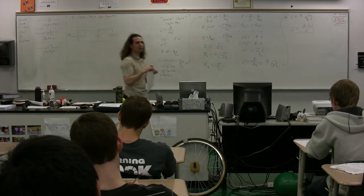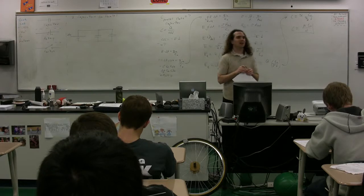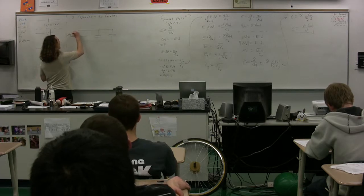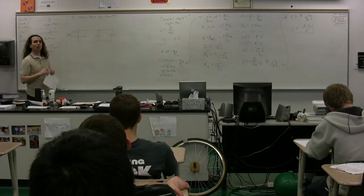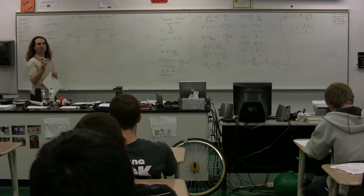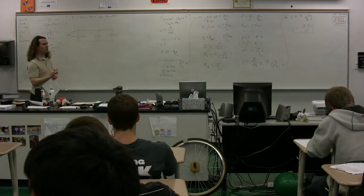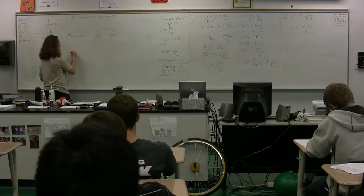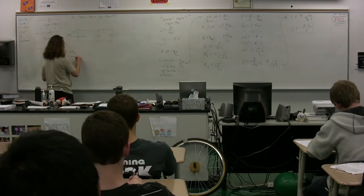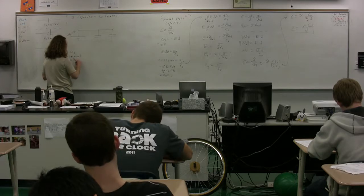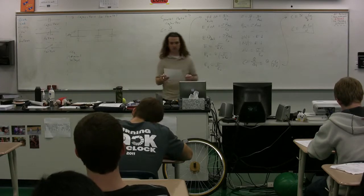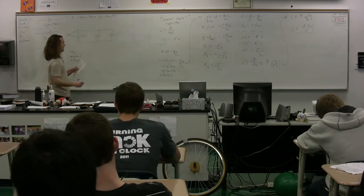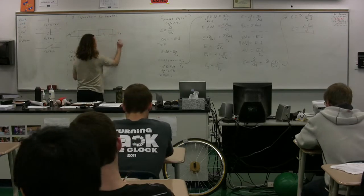Delta V sub T stands for terminal voltage — the voltage at the terminals. Eventually we'll get to the difference between terminal voltage and EMF, the electromotive force, but we're not there today. So delta V sub T stands for the terminal voltage, literally the voltage you would measure at the terminals of the battery. This is the positive plate, this is the negative plate. We'll call this one capacitor one, and we'll call this one capacitor two.